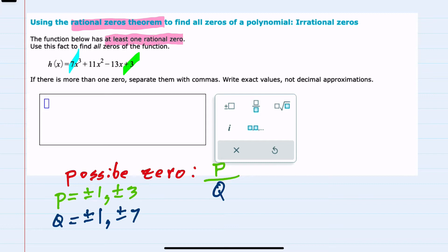So when looking at p over q, I could have one over one which would give me plus or minus one, one over seven so plus or minus one seventh, or the numerator could be three over one which gives us plus or minus three, and then three over seven for plus or minus three sevenths.